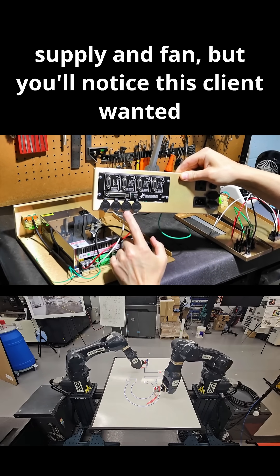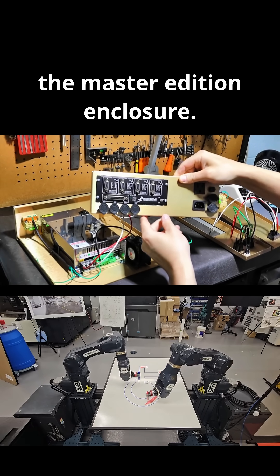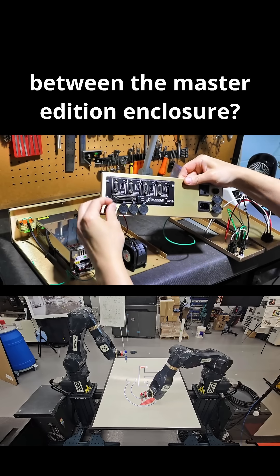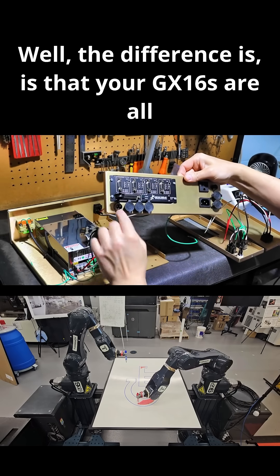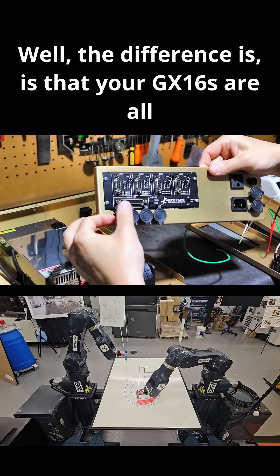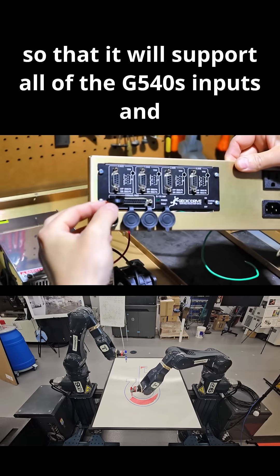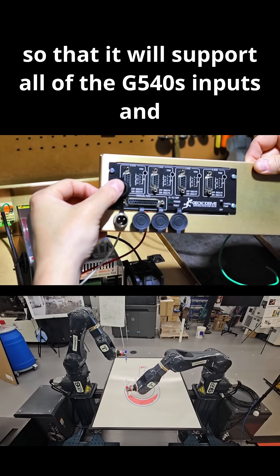But you'll notice this client wanted the Master Edition Enclosure. And I get asked all the time, what is the difference between the Master Edition Enclosure? Well, the difference is that your GX-16s are all put into the rear of the enclosure so that it will support all of the G540's inputs and outputs.